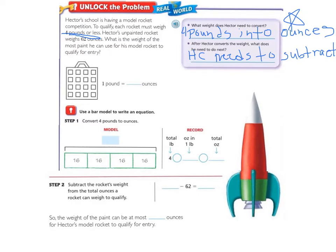Now let's solve our problem. The first thing we'll do is look here. We need to know that 1 pound equals 16 ounces. We will use a bar model in step 1 to convert. So we're going to convert 4 pounds to ounces. Each of these rectangles is 1 pound. And in 1 pound there are 16 ounces. So that's why you see the 16 in the middle of those boxes.